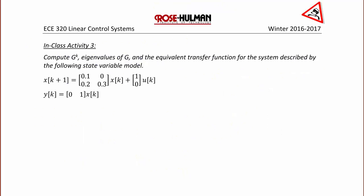In-class activity 3: compute G to the k, the eigenvalues of G, and the equivalent transfer function for the system described by the following state variable model. x(k+1) equals [0.1, 0; 0.2, 0.3] x(k) plus [1; 0] u(k), and y(k) equals [0, 1] x(k). The first step is to find zI minus G.